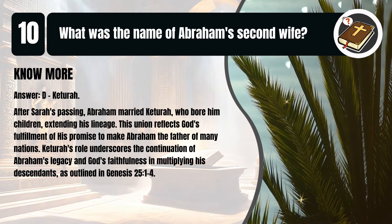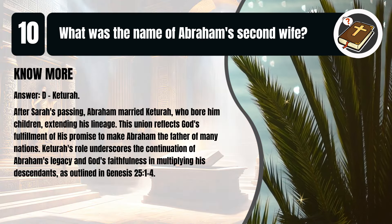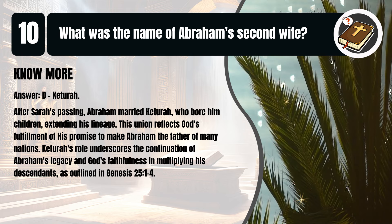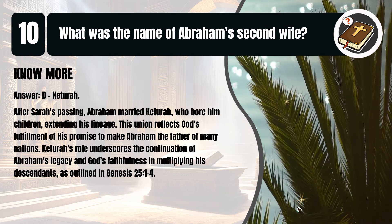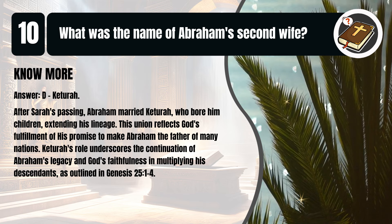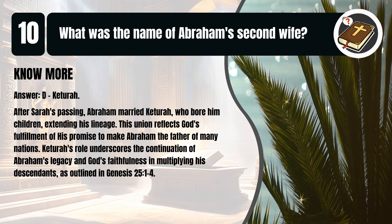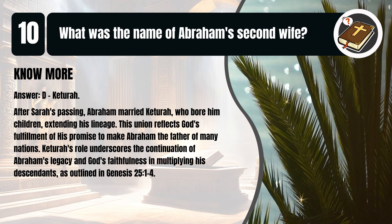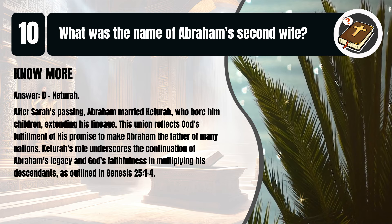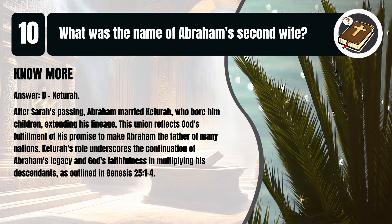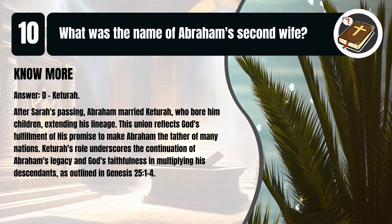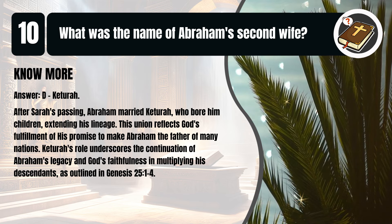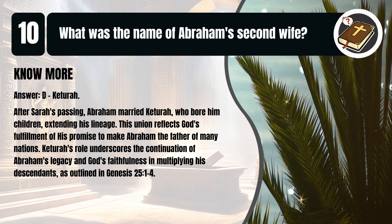That's D. Keturah. After Sarah's passing, Abraham married Keturah, who bore him children, extending his lineage. This union reflects God's fulfillment of his promise to make Abraham the father of many nations. Keturah's role underscores the continuation of Abraham's legacy and God's faithfulness in multiplying his descendants, as outlined in Genesis, chapter 25, verses 1 to 4.